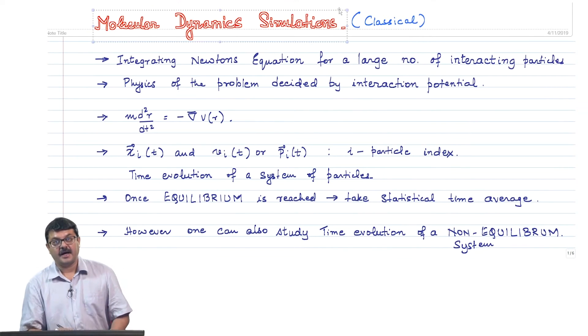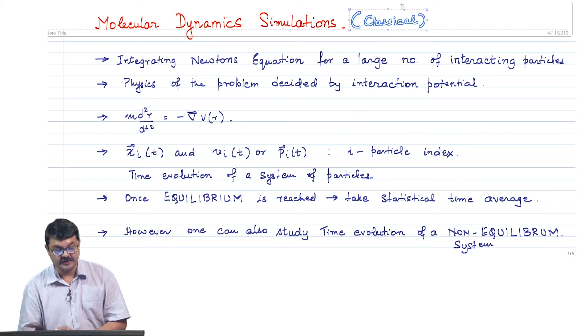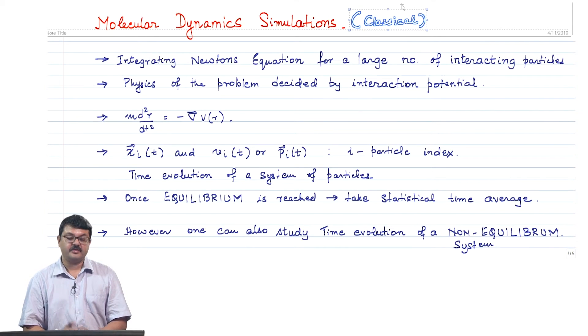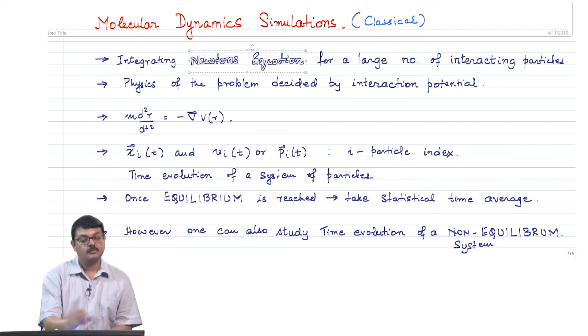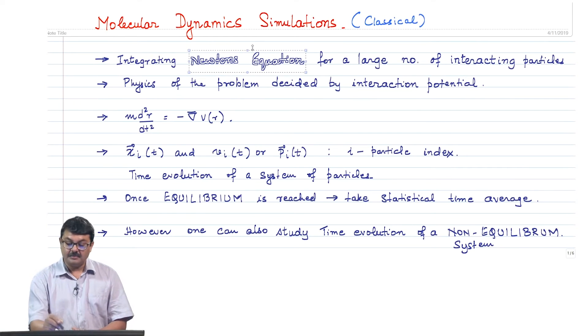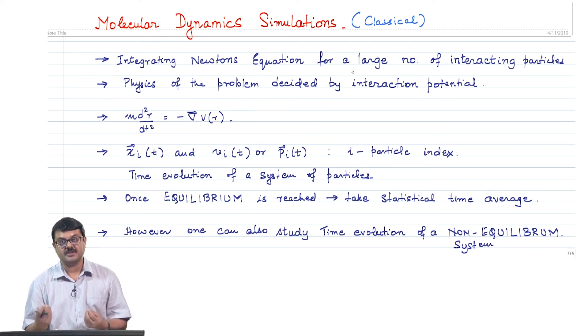Welcome to the last module of this course, where we will be discussing molecular dynamics simulations. In this part we will be talking about classical molecular dynamics — there can also be quantum molecular dynamics. In classical molecular dynamics simulations we are doing nothing more than integrating Newton's equations of motion for a large number of interacting particles, following the position coordinates and the velocity coordinates of the particles.